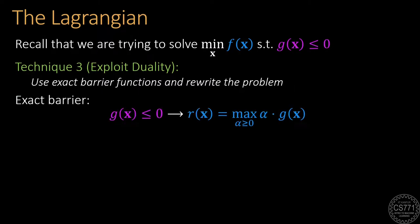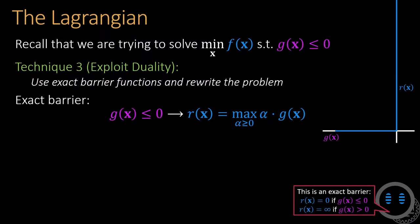Here is an example of an exact barrier. Given a constraint of the form g of x less than or equal to 0, the barrier function maximizes the value of alpha times g of x, where alpha is a helper variable constrained to be non-negative. If the constraint is violated, the maximization is solved when alpha takes an infinitely large value, so the barrier also takes an infinite value. On the other hand, if the constraint is satisfied, the best alpha can do is take a value of 0, so the barrier function also takes a 0 value.